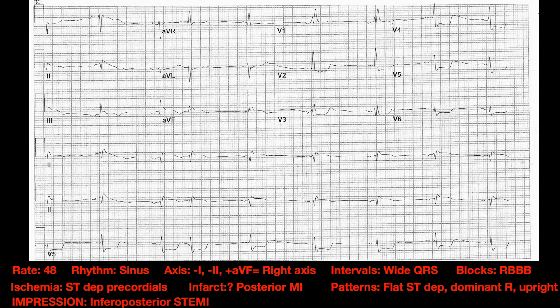So the clinical picture and the EKG are concerning for a posterior MI. This is somebody I would approach aggressively — bypass, go to a cath lab, give aspirin, put pads on, et cetera. Our impression: sinus bradycardia with a right bundle branch block — not clear if that's new or old — and inferior-posterior STEMI. We'll catch you on the next one — stay safe out there.